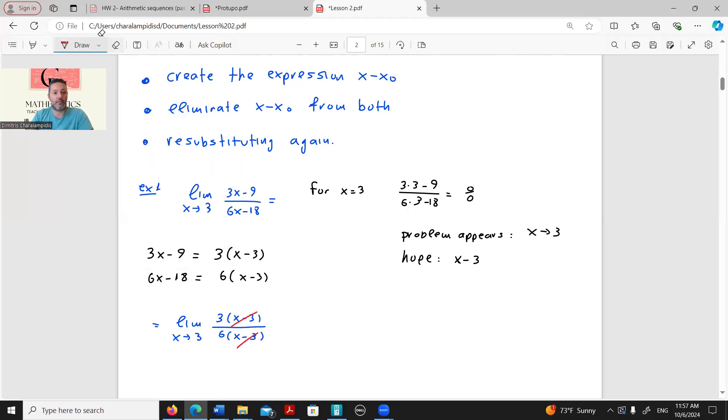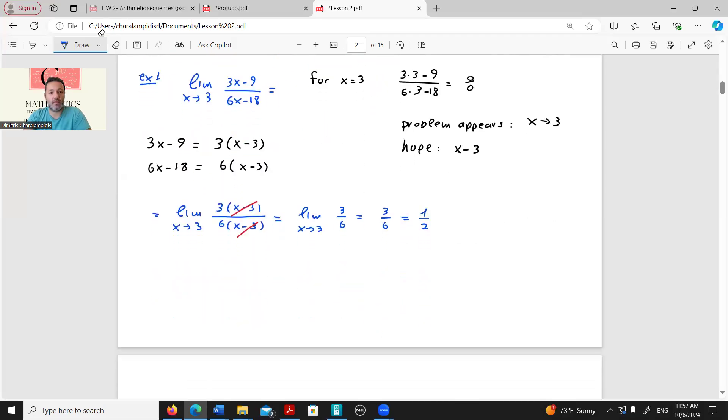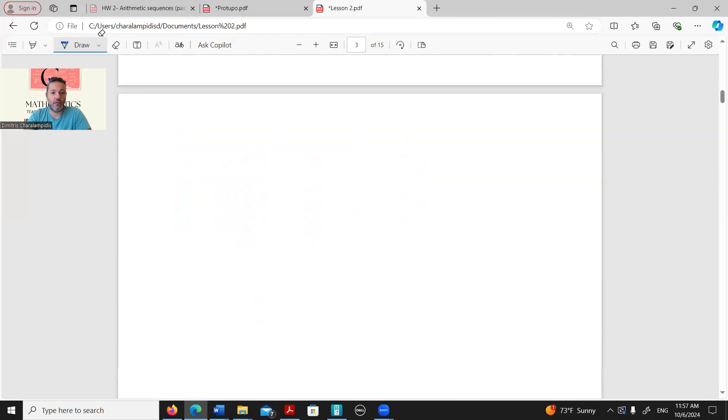Then these will be cancelled out. The x minus 3s are cancelled out, and I continue with the limit when x tends to 3 of 3 over 6, which is equal to 3 over 6, which is equal to 1 half.